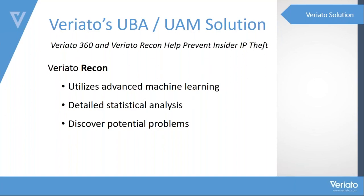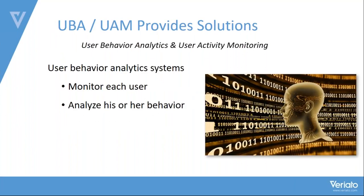Traditional defensive security technologies like firewalls, intrusion detection, and intrusion prevention systems cannot efficiently detect insider threats. User behavior analytics — or UEBA — systems use machine learning algorithms that allow computers to monitor each user and analyze their behavior against an established normal baseline. There are many ways a technically proficient insider can get data out of company control.